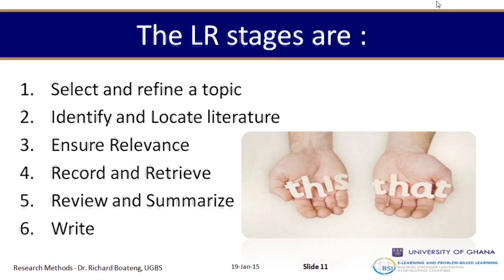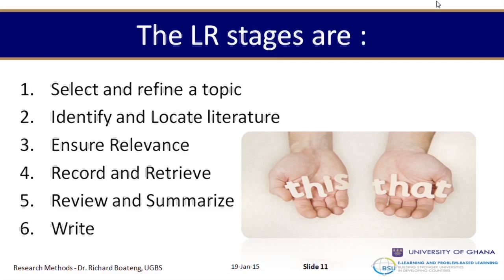Every topic you choose, you select literature relevant to it so you can ask questions on that particular topic. In part one of the literature review, we focus on the first three steps: select and refine the topic, identify and locate literature, and ensure relevance. In the next section, we will look at record and retrieve, review and summarize, and then write.